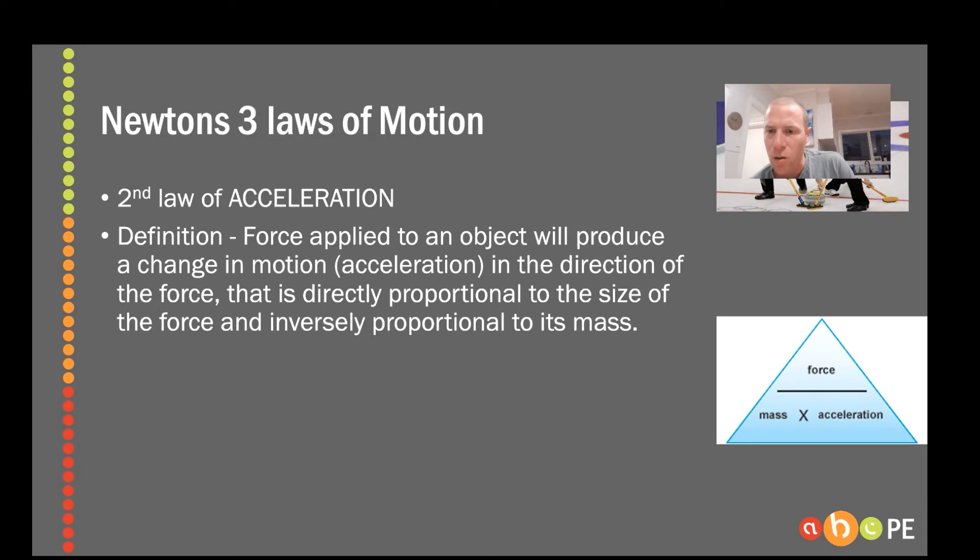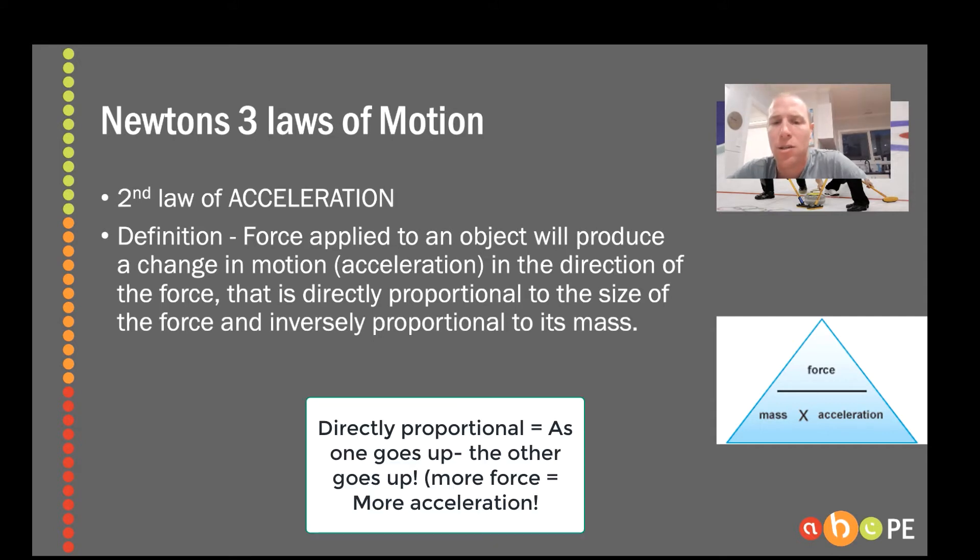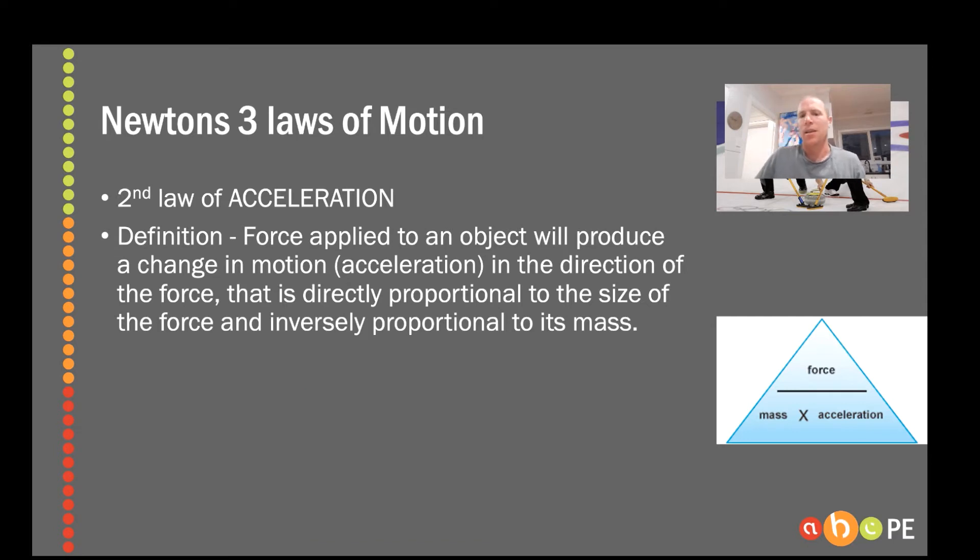That is a whole lot of words that I don't really understand. Let's break that down a little bit. What this basically means is an object, let's call it a ball because that's what it's going to be in most cases, is going to accelerate in the direction that the force has been applied to it. It's going to accelerate dependent upon how big that force is. Directly proportional means a really big force is going to lead to a really big acceleration.